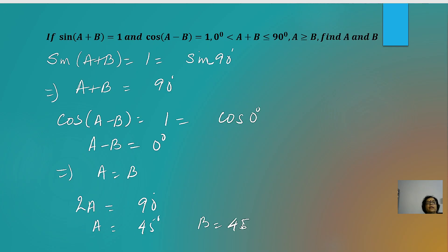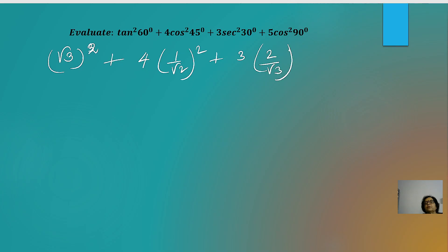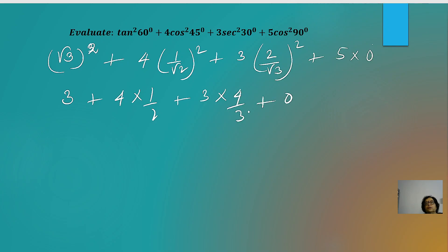The next question: evaluate tan²60 + 4cos²45 + 3sec²30 + 5cos²90. Substituting values: tan 60 = √3, cos 45 = 1/√2, sec 30 = 2/√3, cos 90 = 0. This gives (√3)² + 4·(1/√2)² + 3·(2/√3)² + 0 = 3 + 4·(1/2) + 3·(4/3) = 3 + 2 + 4 = 9. The final answer is 9.